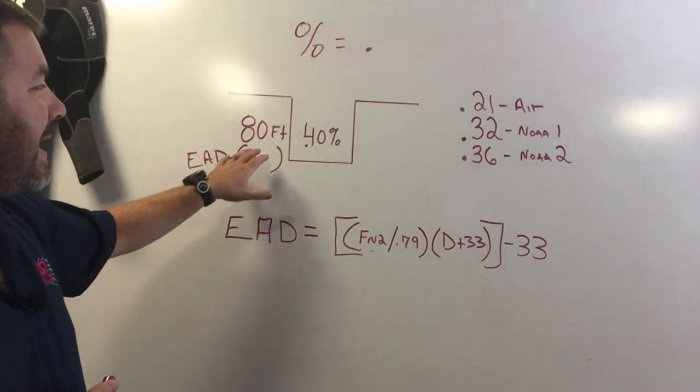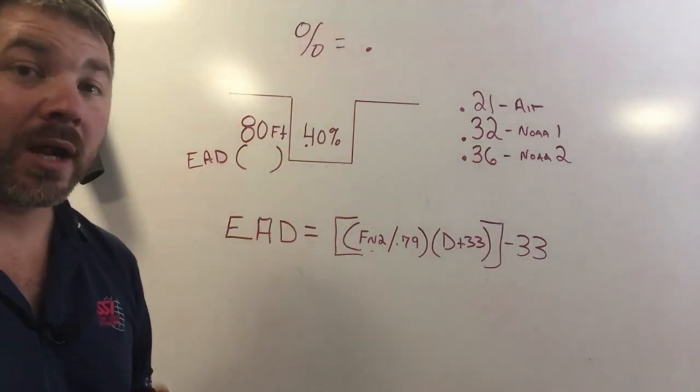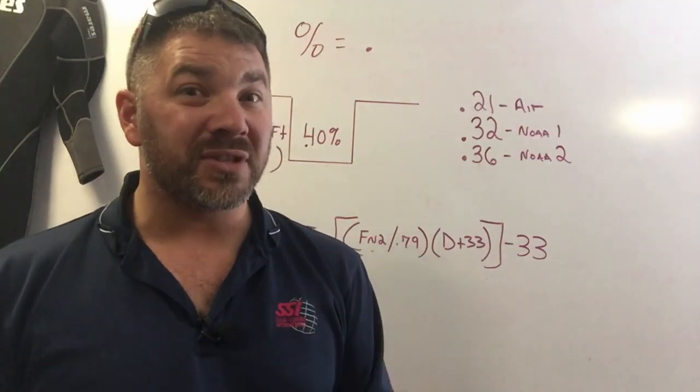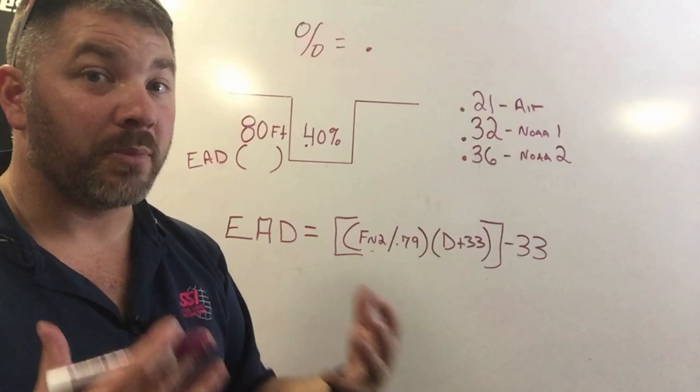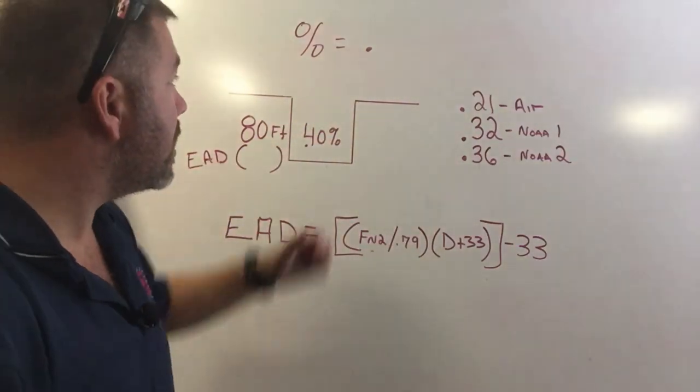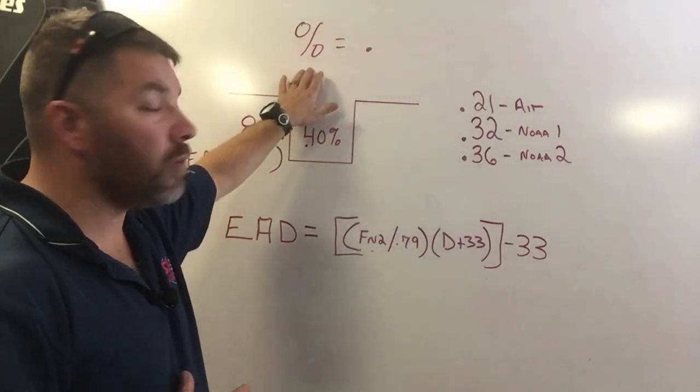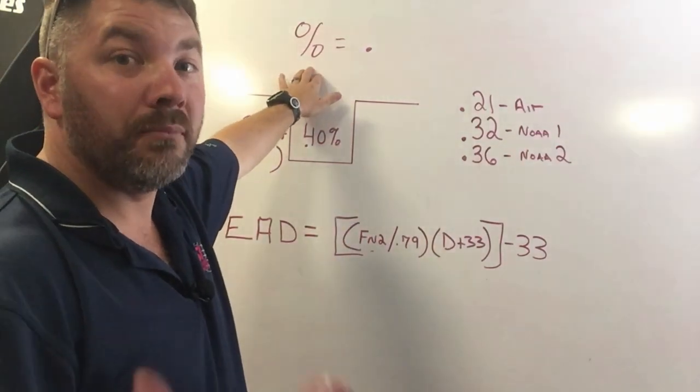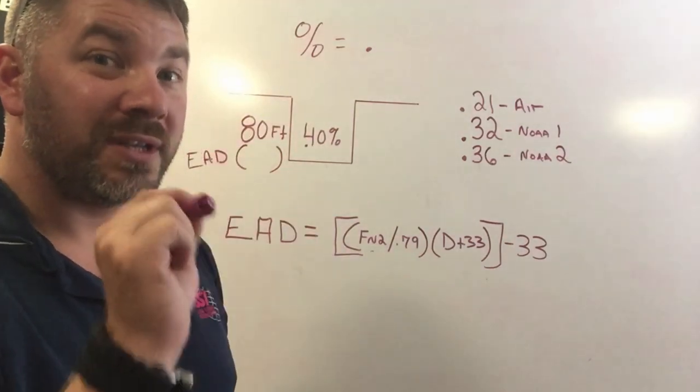What we're going to look at today is an 80 foot dive while using 40%, and before I go any further we need to understand when I say the word percentage I also simply mean decimal point. If I say percentage I mean decimal, if I say decimal I mean percentage, because a lot of times if you're taking a test, say a nitrox test, you'll see the question say in a 40% blend, well what that question is really asking is a 0.40 blend.